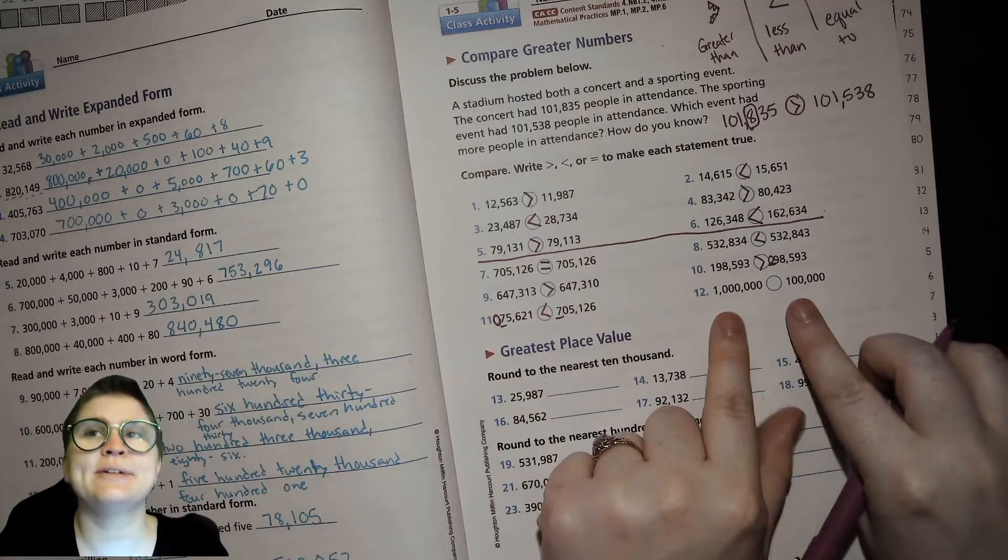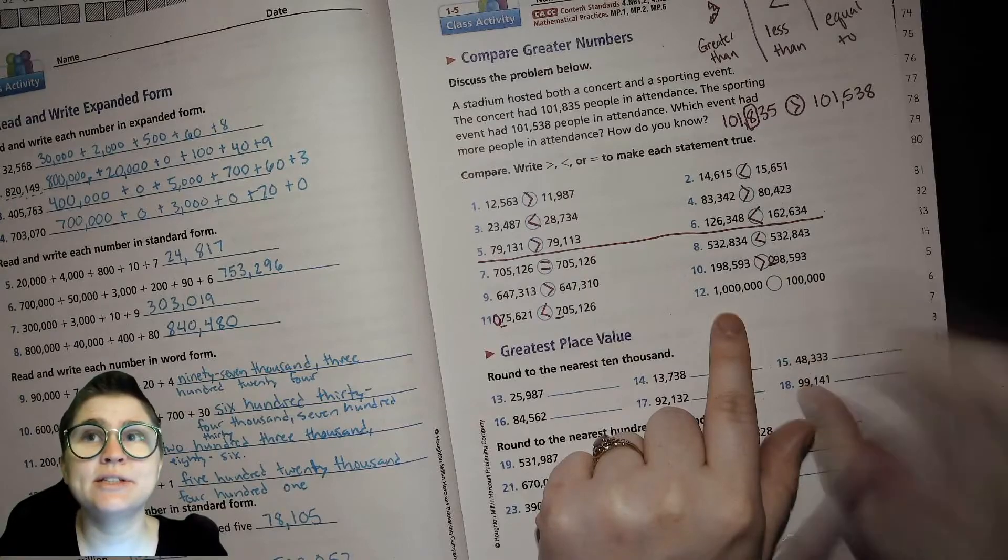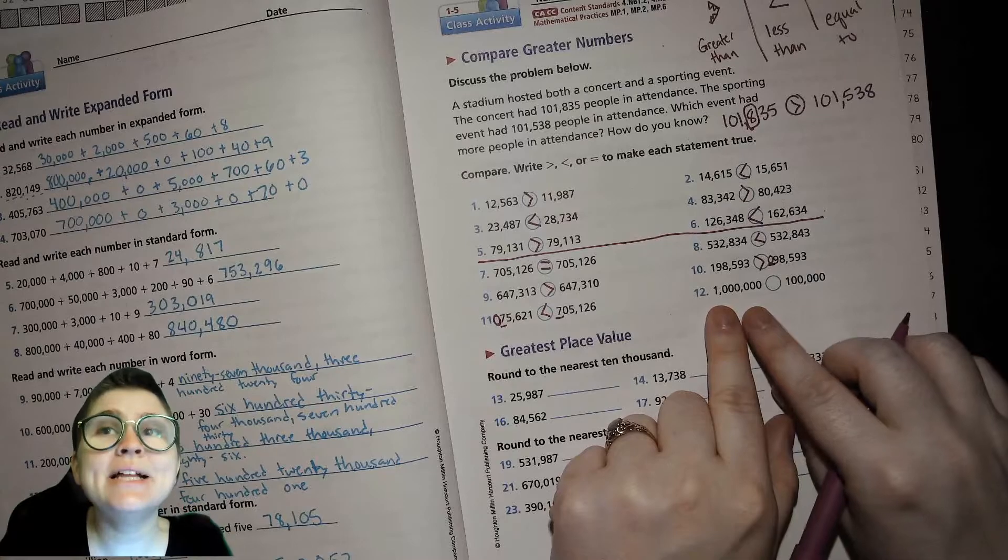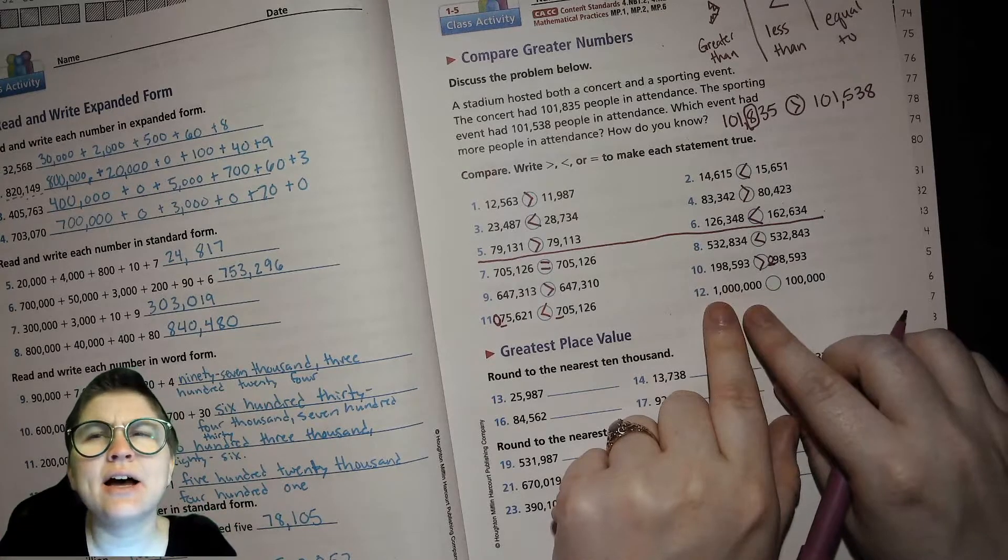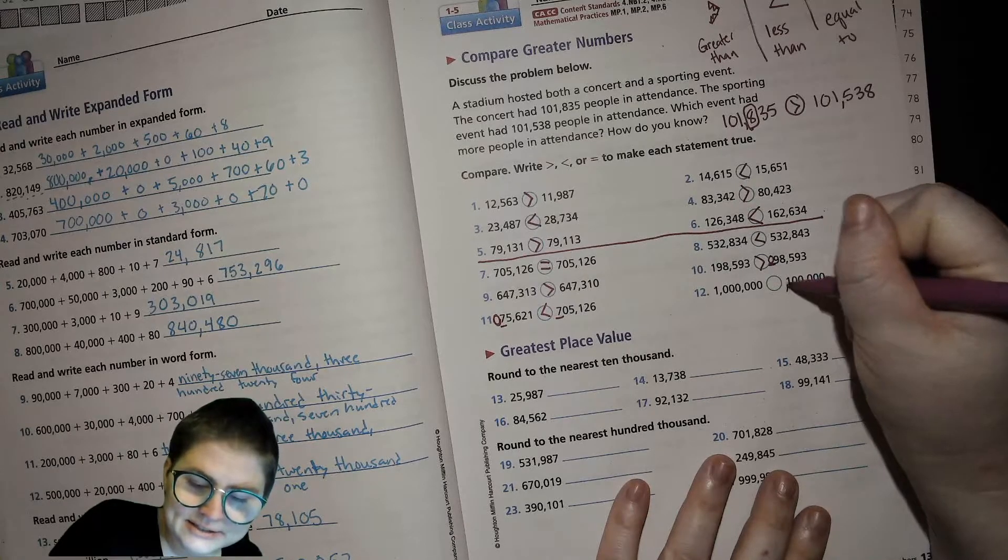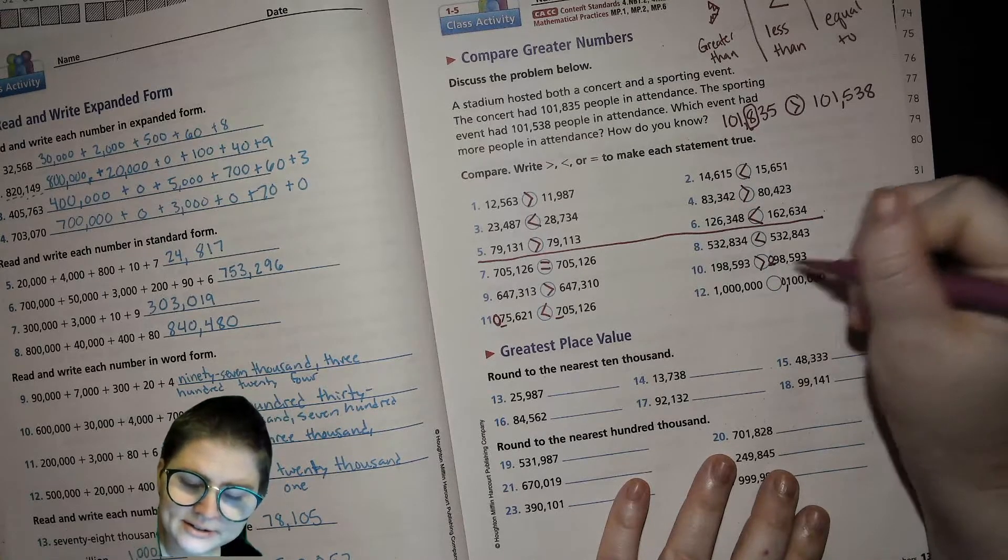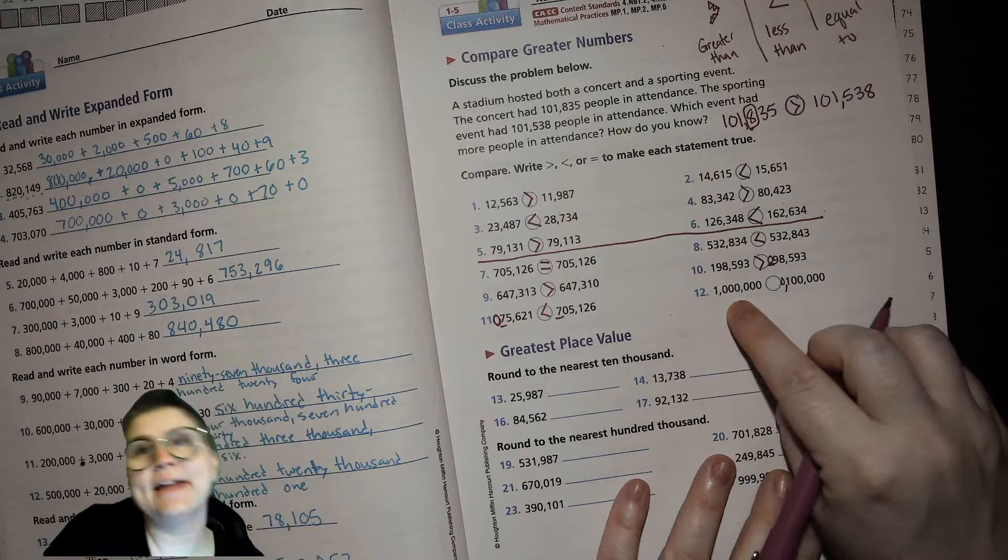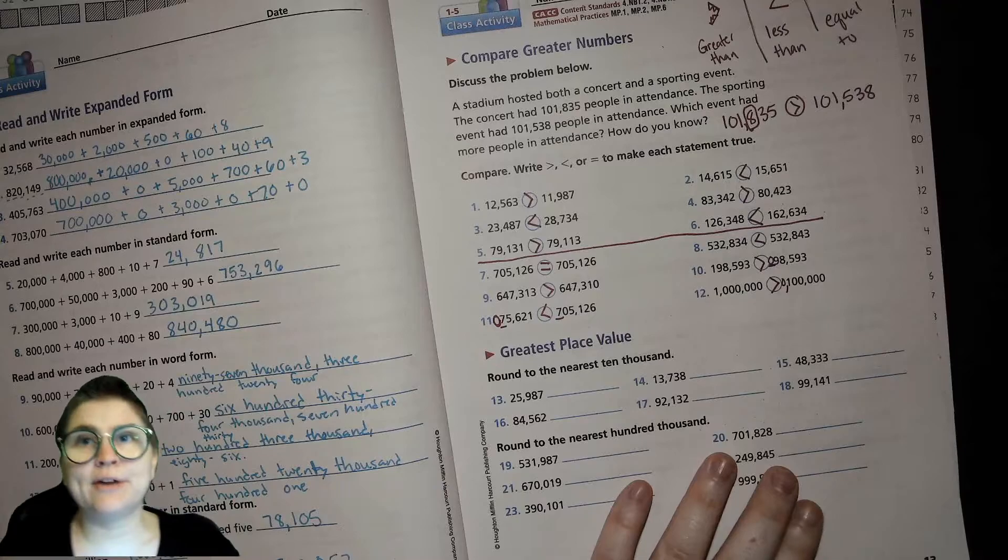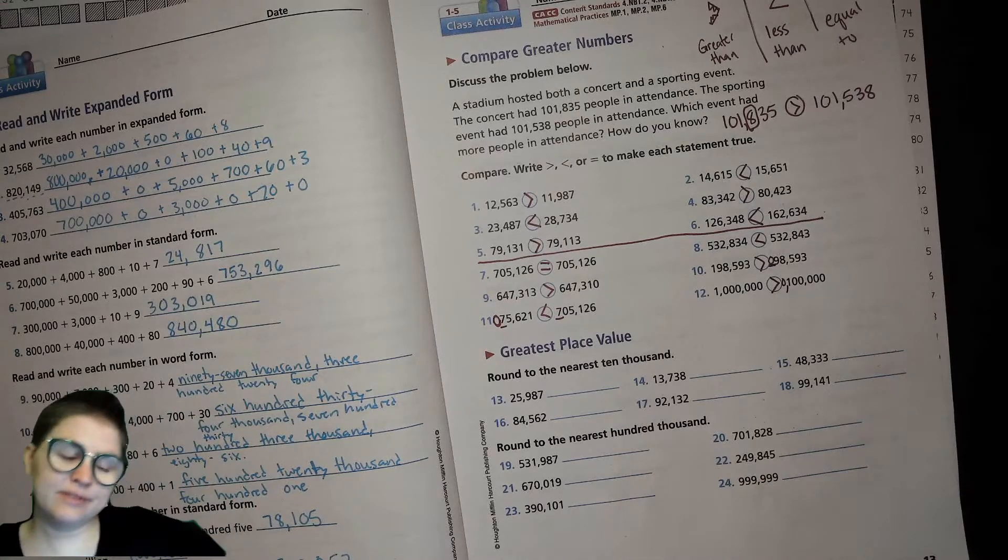What about this one? Just a bunch of 0s and 1s? No, they're different, right? This is 100,000. This is 1 million. This is way bigger. This has 0 millions, right? This is really 10,100,000s. So, it's a greater number.